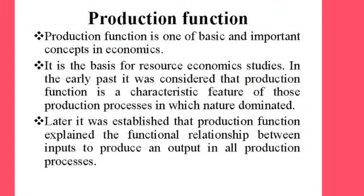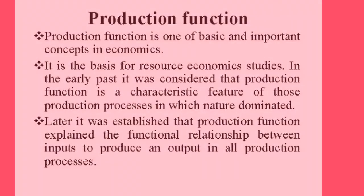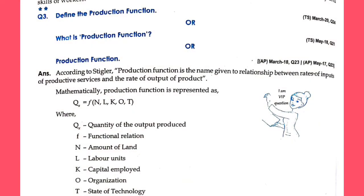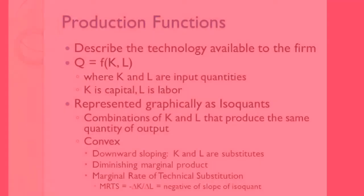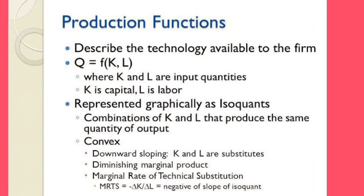Q stands for the quantity of output of the product — for example, 100 grams or 500 grams. F represents the functional relationship, and N means the amount of land being used.